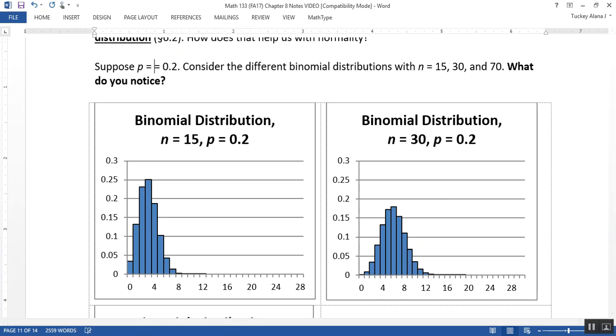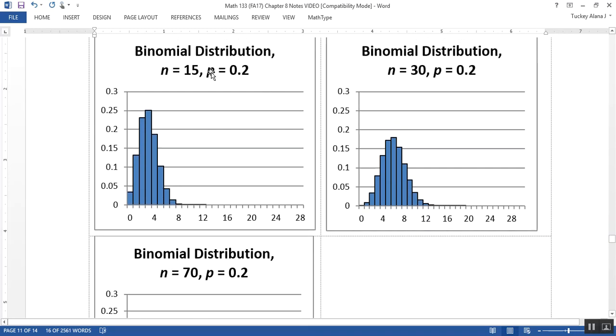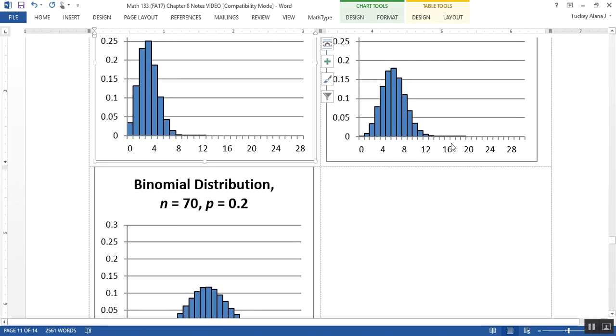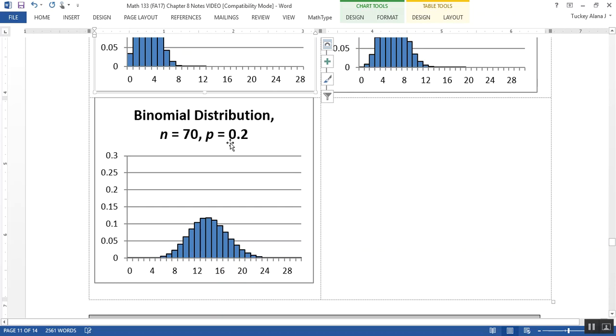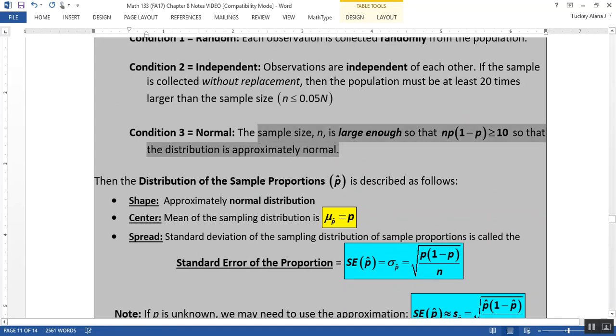Consider the probability of success is 0.2, which is p in that section. Look at what happens to that distribution as I let n, the sample size, get larger and larger. You'll notice that as n increases - in this top left corner graph, n equals only 15 and it's quite skewed right. As n becomes 30, it still has a little bit of a tail. But as n becomes 70, the distribution becomes effectively normal.